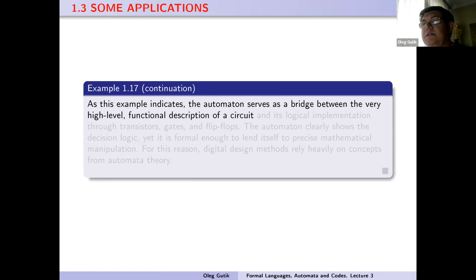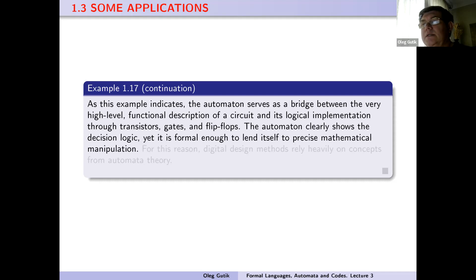As this example indicates, the automaton serves as a bridge between the very high-level functional description of a circuit and its logical implementation through transistors, AND gates, and flip-flops. The automaton clearly shows the decision logic, yet it is formal enough to lend itself to precise mathematical manipulation. For this reason, digital design methods rely heavily on concepts from automata theory.